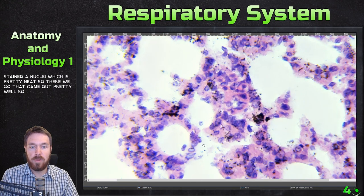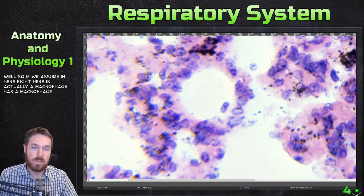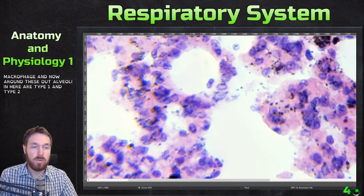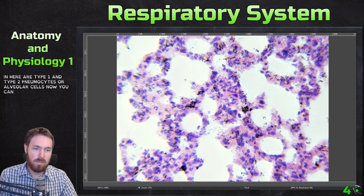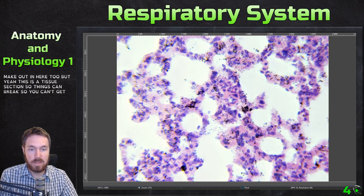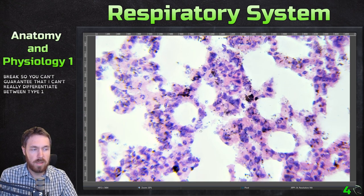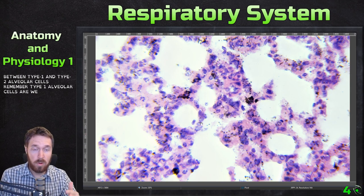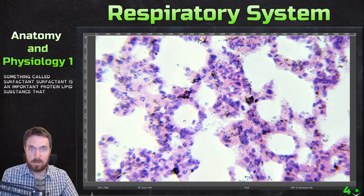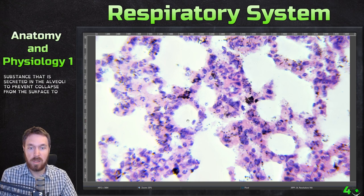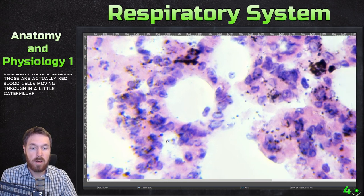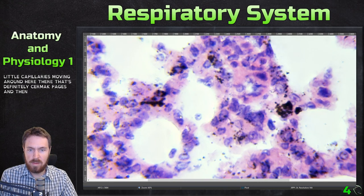The stacked image came out pretty well. Zooming in: right here is actually a macrophage — an immune system patroller — and there's another macrophage. Around these alveoli are type 1 and type 2 pneumocytes, or alveolar cells. You can make out some alveolar pores too, though in a tissue section things can break so you can't guarantee them. Type 1 alveolar cells are where most diffusion of gases takes place; type 2 alveolar cells produce surfactant — an important protein-lipid substance secreted in the alveoli to prevent collapse from water's surface tension.